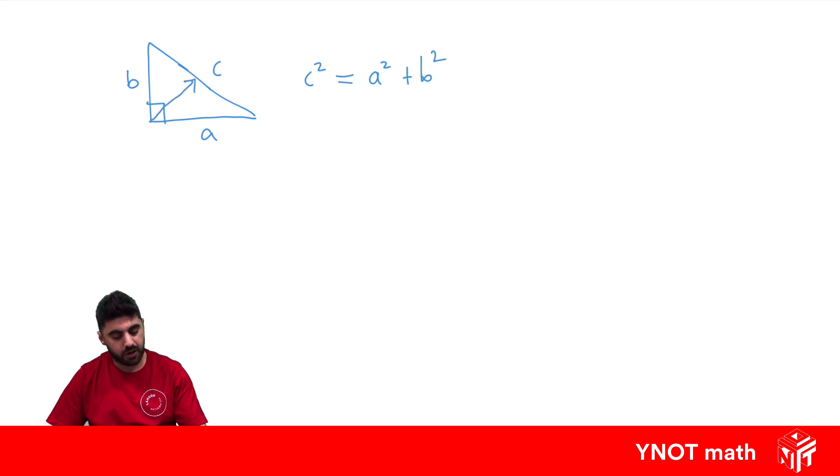Remember, the hypotenuse is always the longer side and it's the one opposite the right angle. So this one here is the hypotenuse. Let's use it to find the length of a hypotenuse.